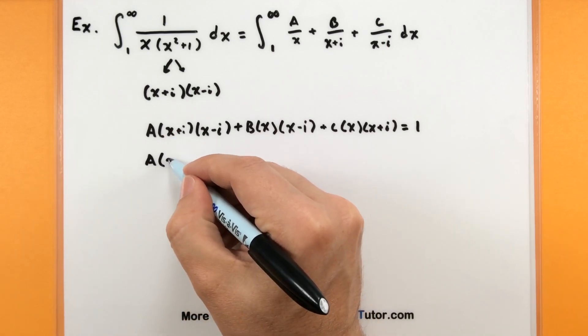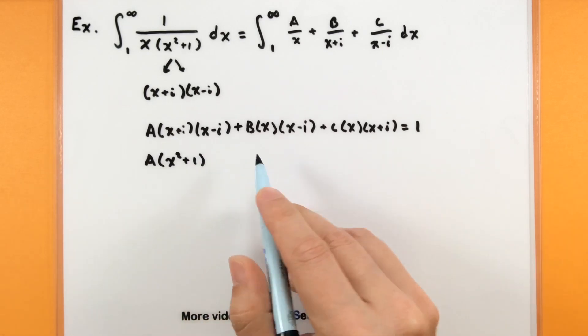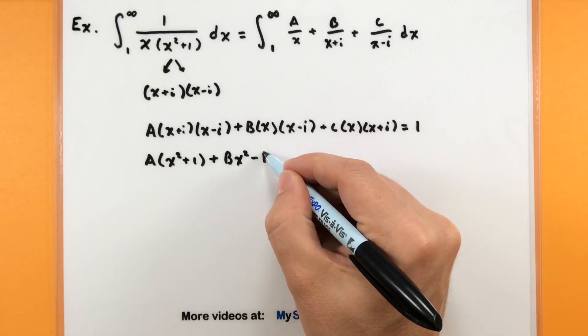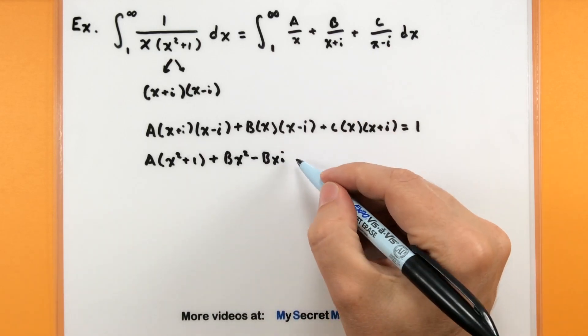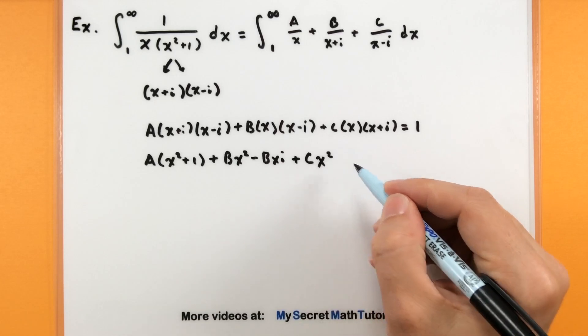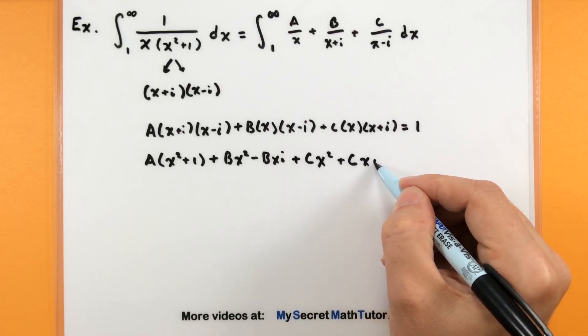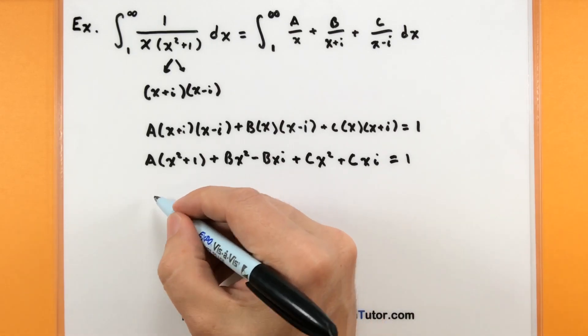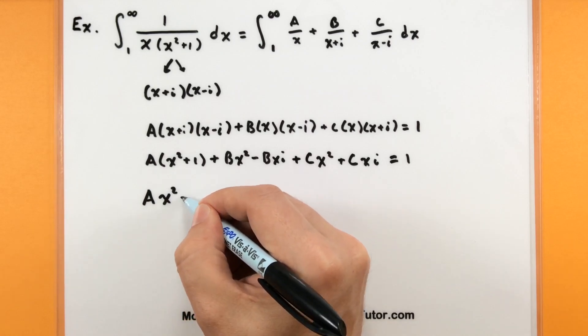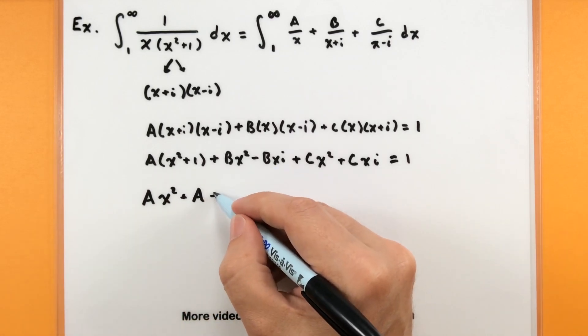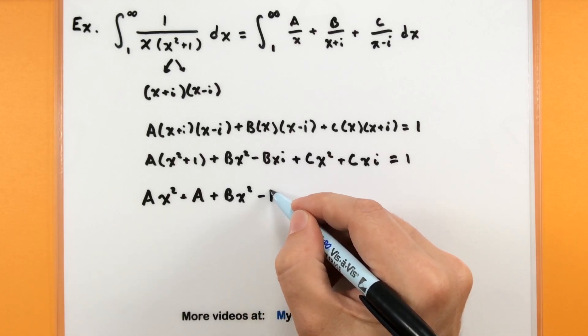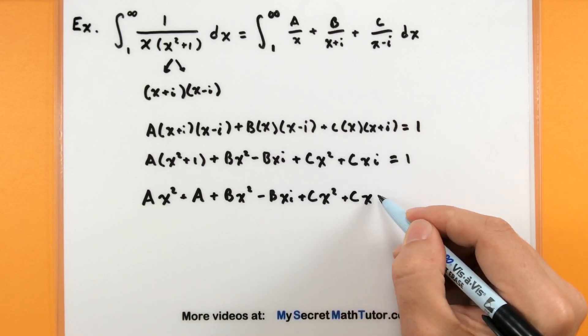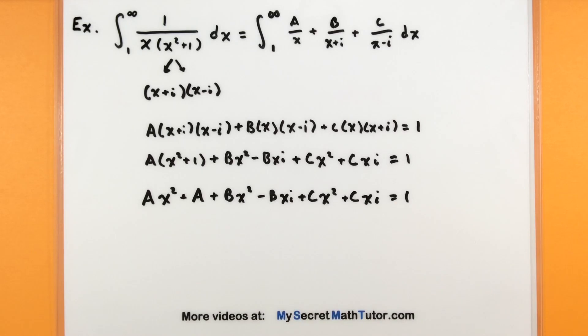So we're going to use this and kind of manipulate it a little bit. Hopefully we can figure out what these equal to in the end as soon as we develop a system of equations. So let's see, we'll put this back together. This will be x squared plus one. And let's go ahead and distribute this through. So this will be bx squared minus bxi plus cx squared plus cxi. All of that is still equal to one. Let's see, just a little bit more distributing here. So I have an ax squared plus an a.